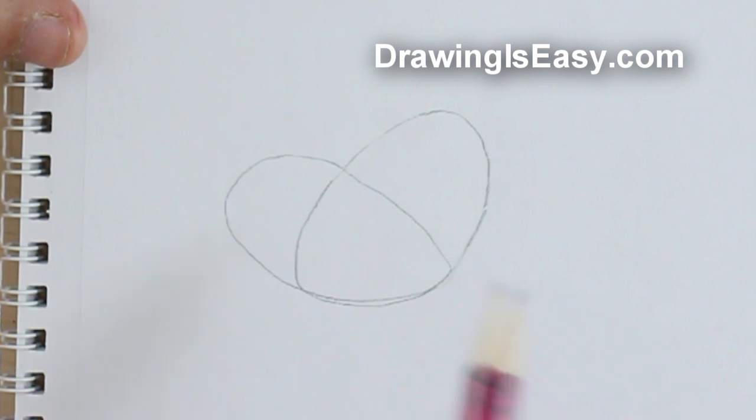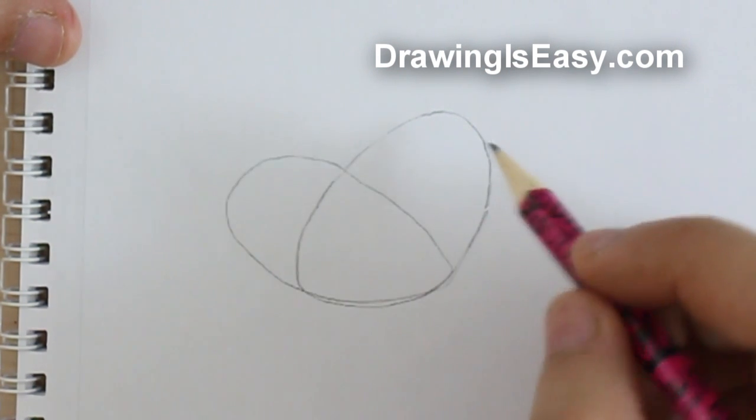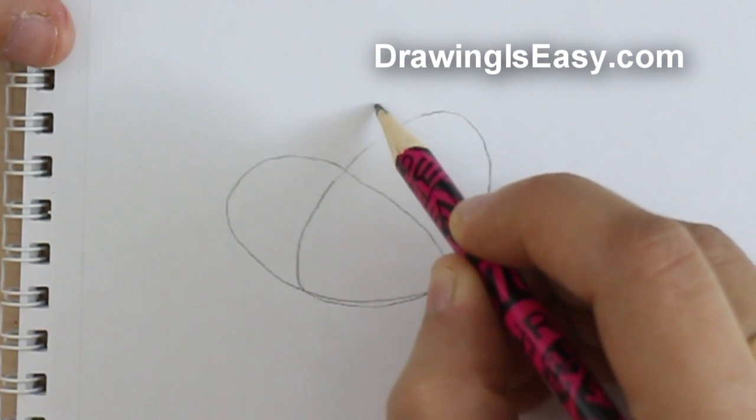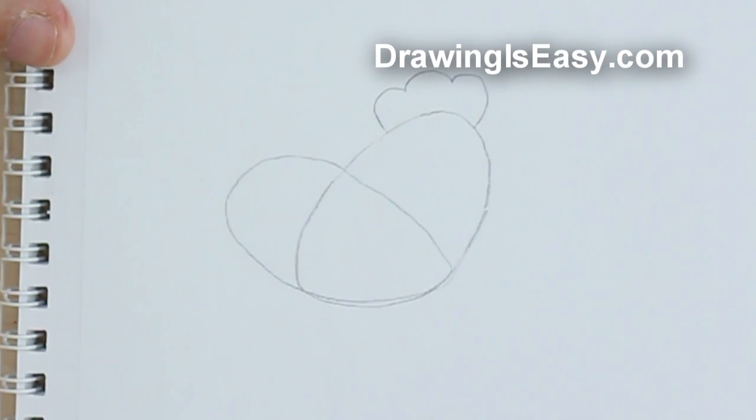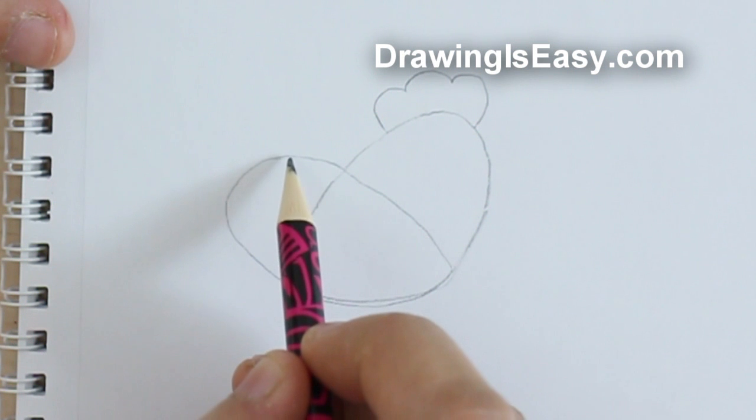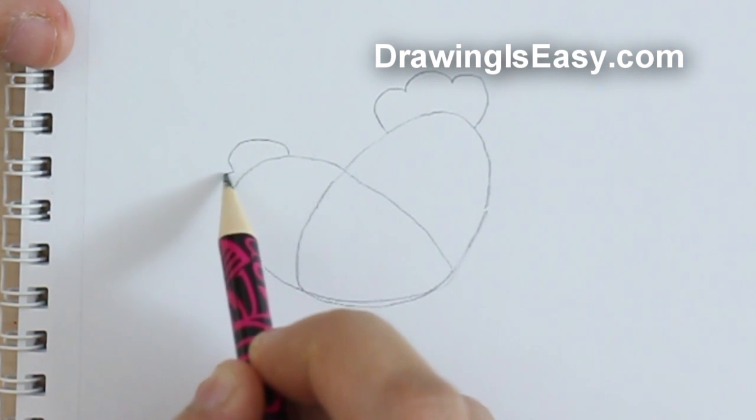After overlapping the oval on the side, we will start by making the crest of the chicken. We will simply make a letter M on one side and then a letter M on the other side of the oval.